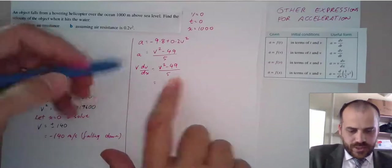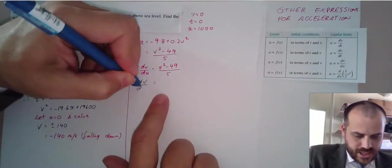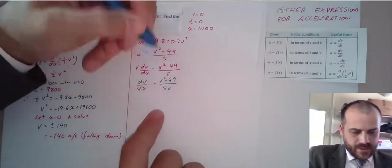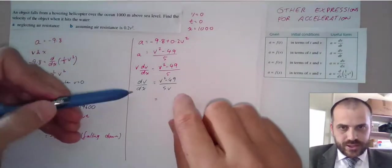Now that we have it in that form, we can divide both sides by V to get V, DV, DX by itself. And then integrate so we can get some sort of value.